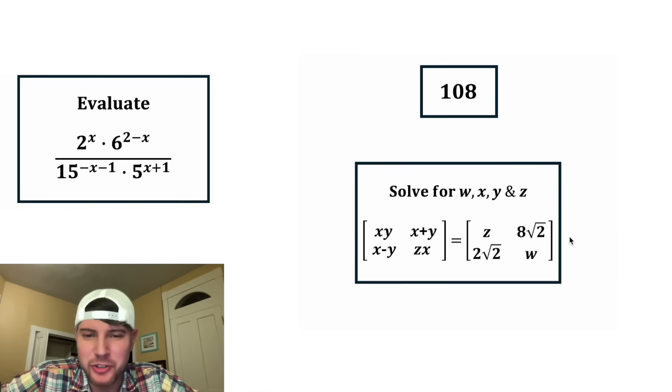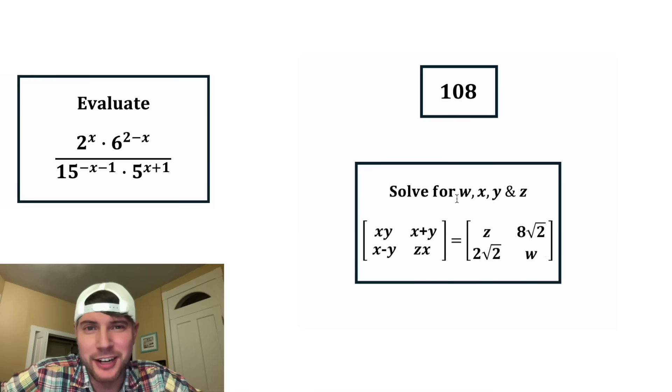And here's tomorrow's question. It wants us to solve for w, x, y, and z. And we're given a 2 by 2 matrix is equal to another 2 by 2 matrix. I think it's going to be a 4 by 4 system of equations. You're not going to want to miss this one.